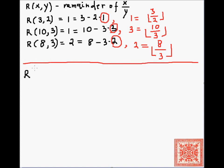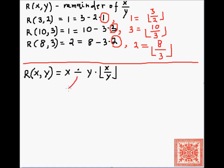We will compose it from the functions that we have shown to be primitive recursive. So, r of x and y is equal to x dot-minus y times the floor of x and y. The dot-minus is the function we showed to be primitive recursive in previous screencasts — it is safe subtraction: x dot-minus y equals 0 if y is strictly greater than x, otherwise it is x minus y.